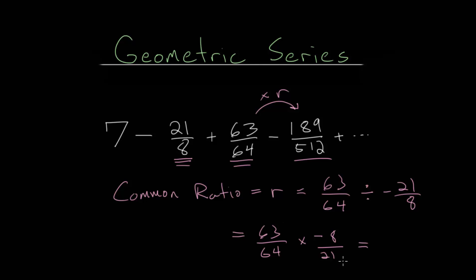And 63 over 21, we can simplify that, that's just 3. And 8 over 64, that's going to be 1 over 8. And the negative will carry along, and so we get minus 3 eighths.